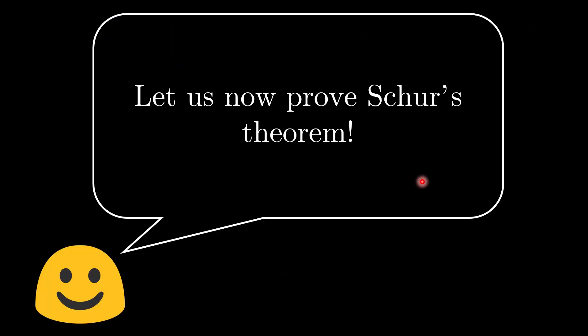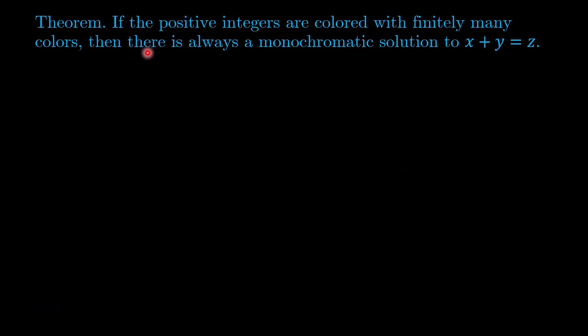And right now we can use this to prove Schur's theorem. Just to recap, Schur's theorem says that if the positive integers are colored with finitely many colors, then there is always a monochromatic solution to x plus y equals z.